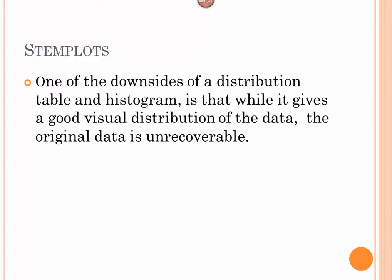One of the downsides of what we just did in a frequency distribution table and histogram is while it gives a good visual distribution of the data, the original data is really unrecoverable. In other words, once it goes into its class, we don't know whether it was closer to 1500 or closer to 1600. The original data gets kind of lost.